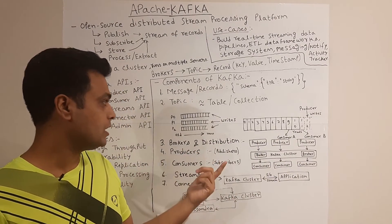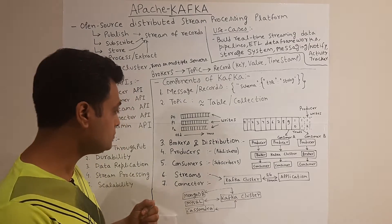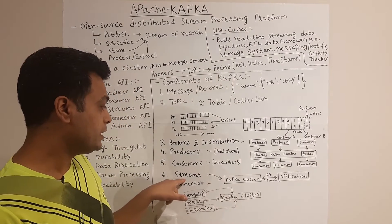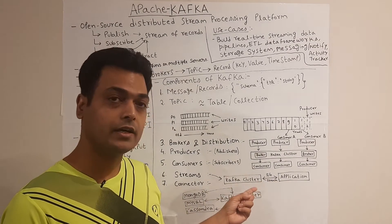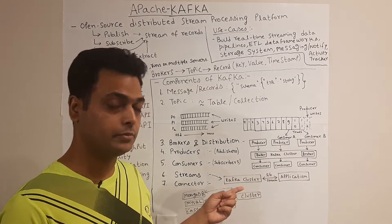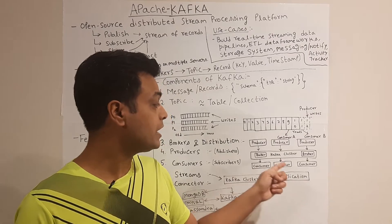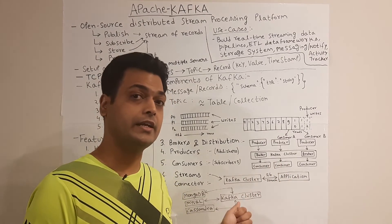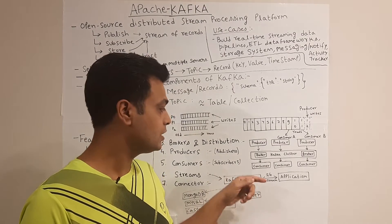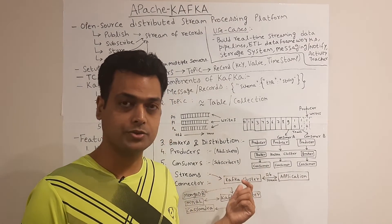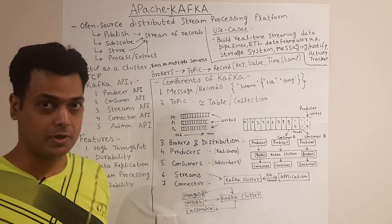Producers are just writers or publishers; consumers are subscribers or readers. The concept of stream means it is bi-directional data — you can have a Kafka cluster that writes data to an application and the application can write data back to Kafka. A Kafka cluster supports read and write on the same IO stream, and that's basically what a stream is defined as in Kafka.